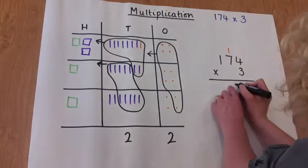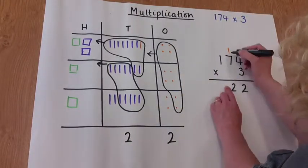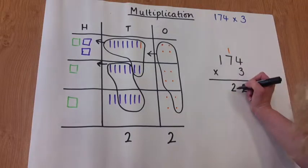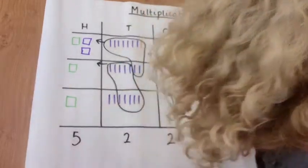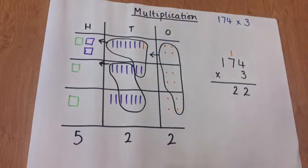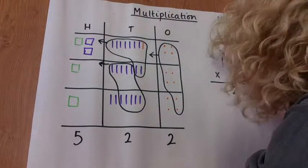On the pictorial, 7 times 3 is 21, plus one more 10 makes 22. We'll do the hundreds, not forgetting to regroup the 200s on the abstract.